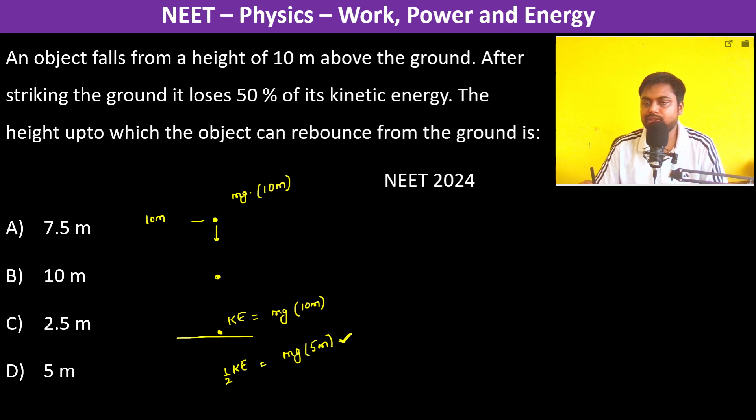Now it is going to rebound to a point where the velocity is 0. Therefore, the entire kinetic energy is converted into potential energy. So M × G × 5 meters equals M × G × H₁. MG cancels out, and H₁ becomes 5 meters. Therefore, the height up to